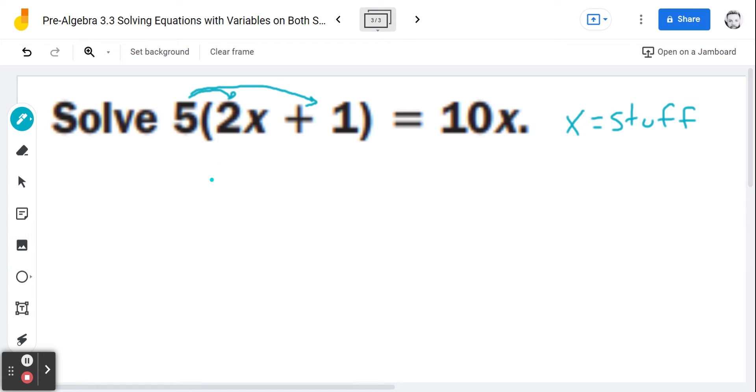So 5 times 2x is 10x, right? 5 times 2 is 10. So if I have 2x's and I multiply those by 5, I get 10x's. What's 5 times positive 1? Positive 5. Why did I say it that way? Because I don't want to forget that plus 5.